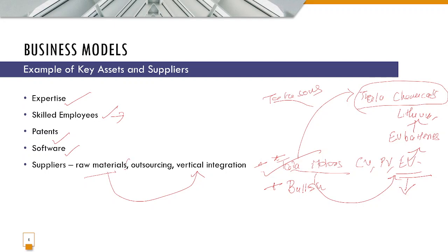Outsourcing is when you don't manufacture yourself but outsource the manufacturing to some third party. Apple is a good example — Apple does not have a factory in the US manufacturing iPhones. iPhones are manufactured in China and, more recently, in India. None of the production takes place in the US. So Apple outsources its manufacturing — China and India manufacture iPhones for the world. These are examples of key assets.